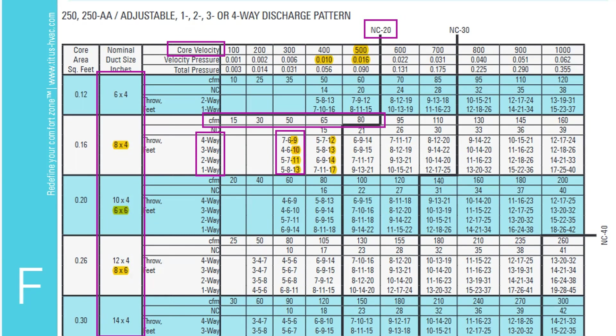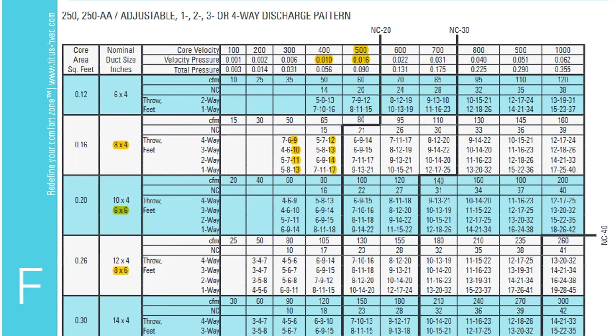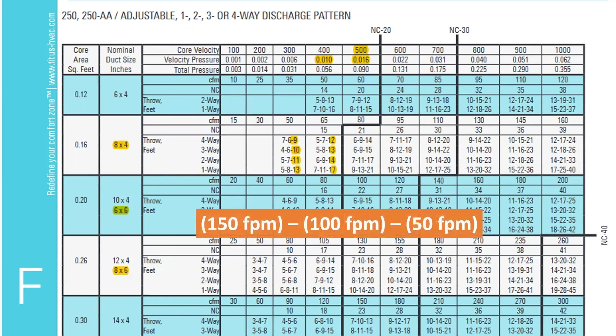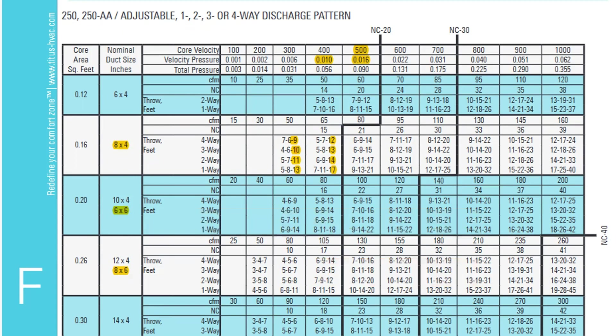The three values show the distance at which the air is traveling a certain velocity. As the air moves further away from the grill and mixes with the room air, it slows down until eventually it doesn't have enough forward velocity to keep moving forward and instead begins to fall. For Titus, the three velocities the throw is given for are 150 feet per minute, 100 feet per minute, and 50 feet per minute — or terminal velocity. This is the point at which the air won't really move forward anymore and will begin to fall. So this third throw value is the one we care about the most; that is the one we want to match to the distance from our grill to our hot wall.